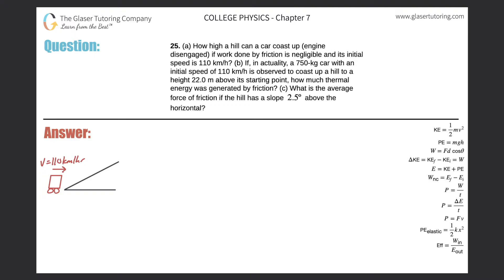Number 25, letter A: how high a hill can a car coast up with the engine disengaged, if work done by friction is negligible and its initial speed is 110 kilometers per hour? So the initial speed is 110 km/h, and I want to convert this into meters per second.